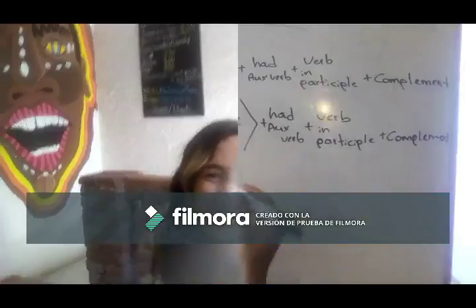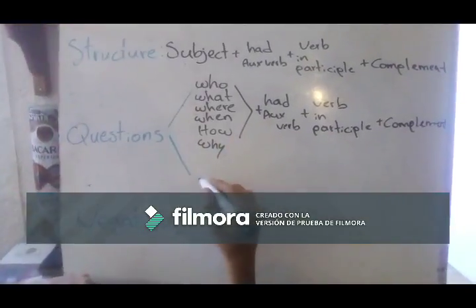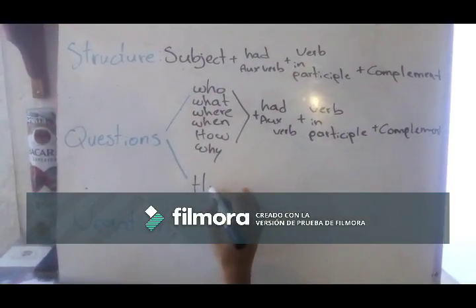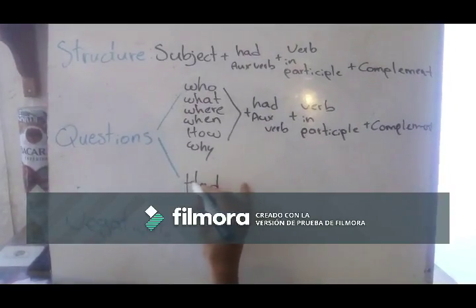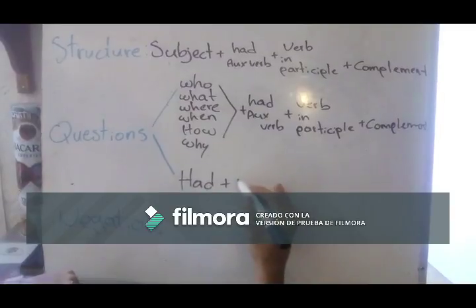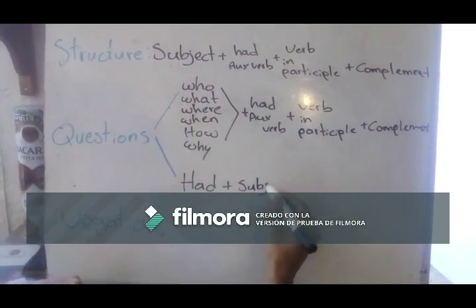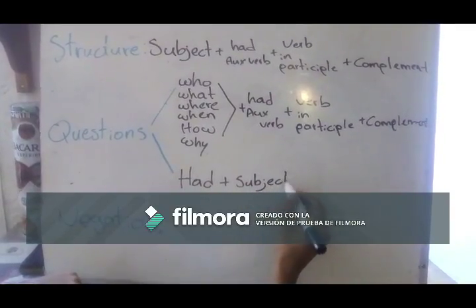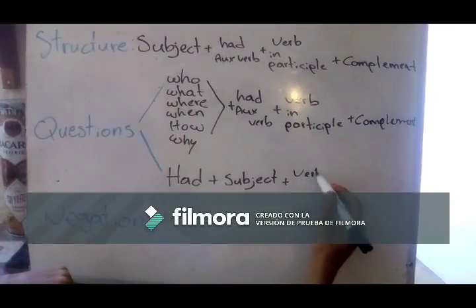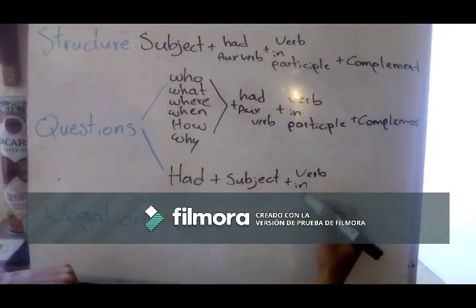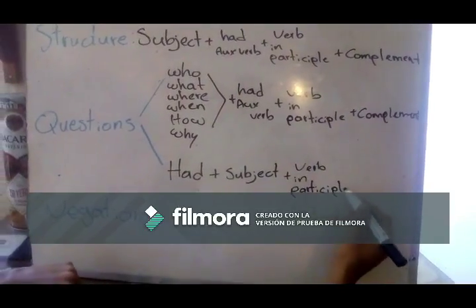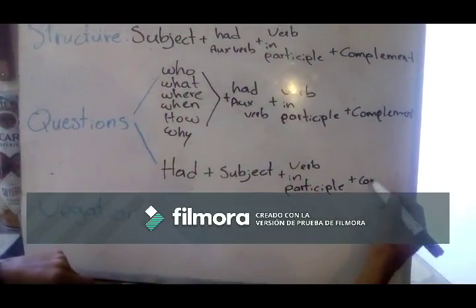The other kind of questions begins with our auxiliary verb 'had', which is 'have' in past, plus the subject, plus the verb in participle, plus the complement.